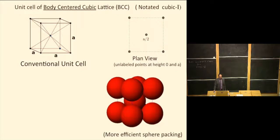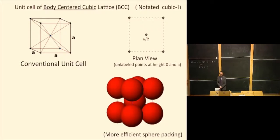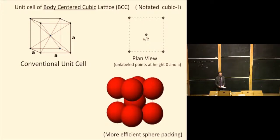This point corresponds to this point here; unlabeled points are at height zero and A. Now, if you actually put atoms at the lattice points of the body-centered cubic lattice, you notice that you pack the spheres fairly efficiently — you fill the hole that you would have had with just a simple cubic lattice. Because of that, this is a much more common arrangement for atoms. Lots of elements — sodium, lithium, iron, potassium — all take body-centered cubic lattice configurations.